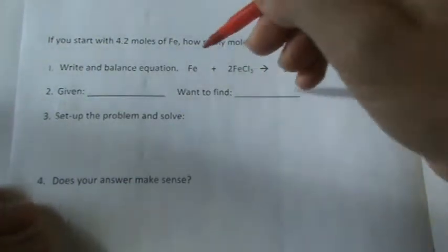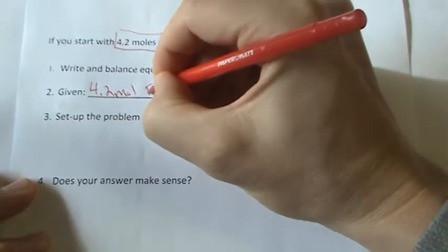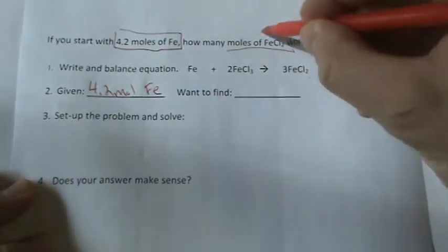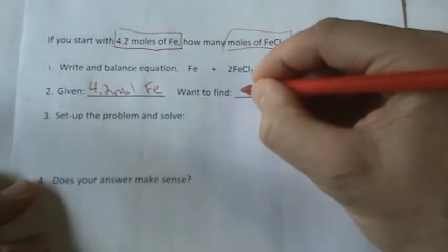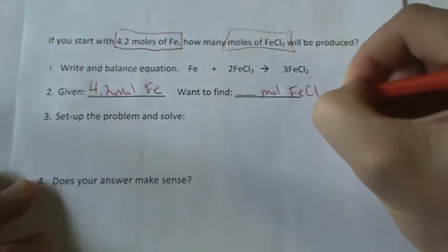Let's look at the equation to see what we're given. We start with 4.2 moles of Fe, and we want to find how many moles of FeCl2.